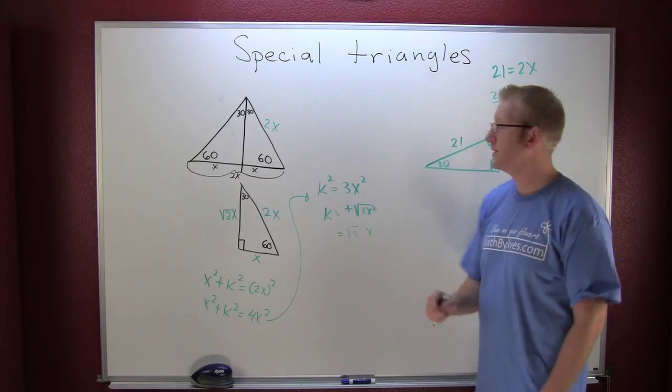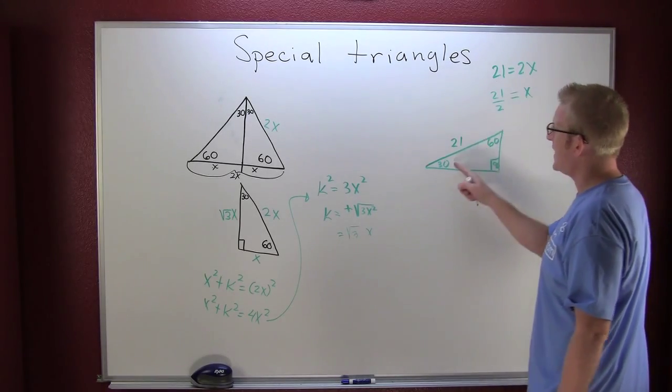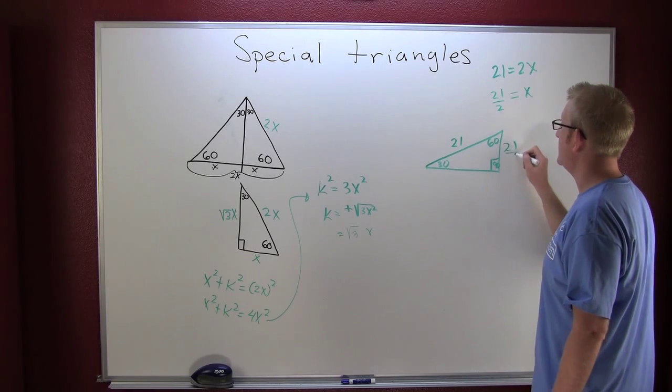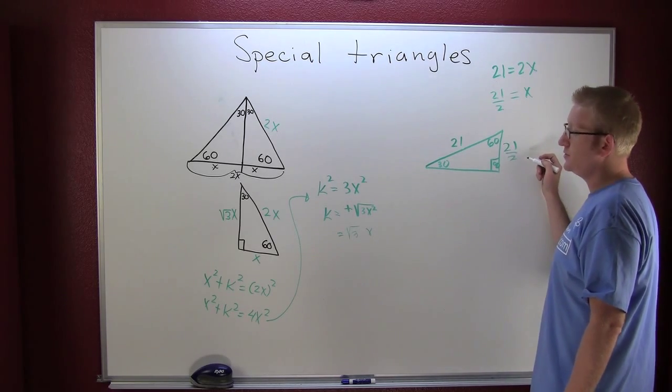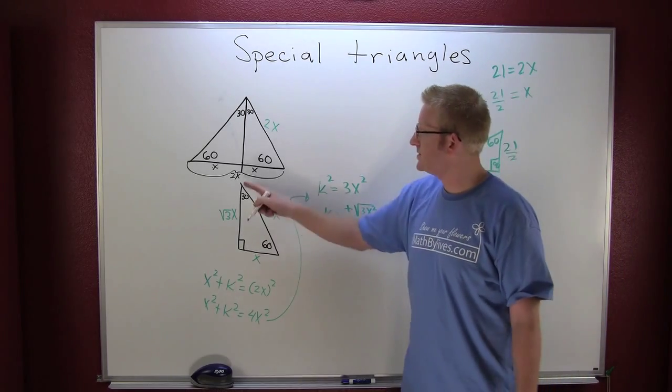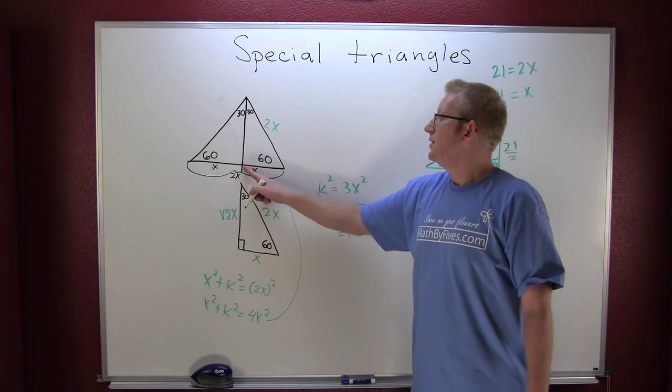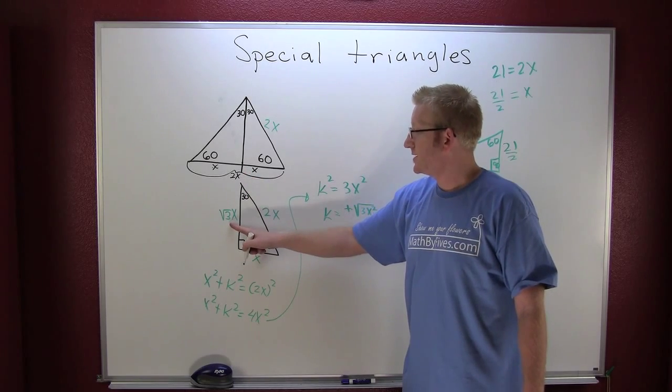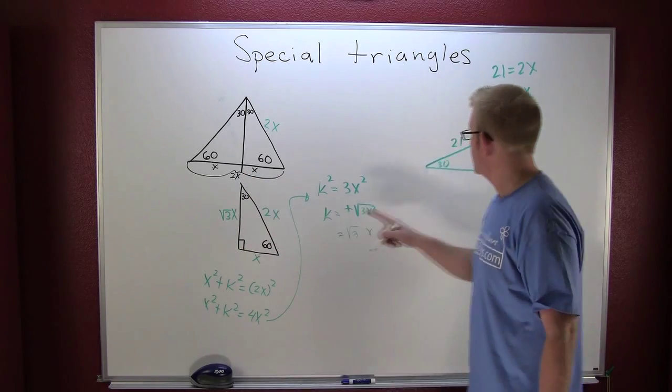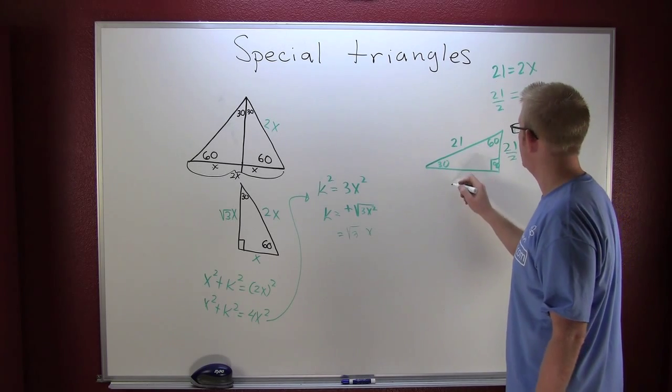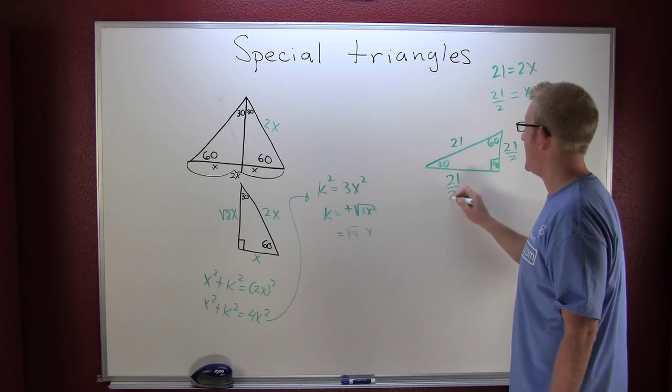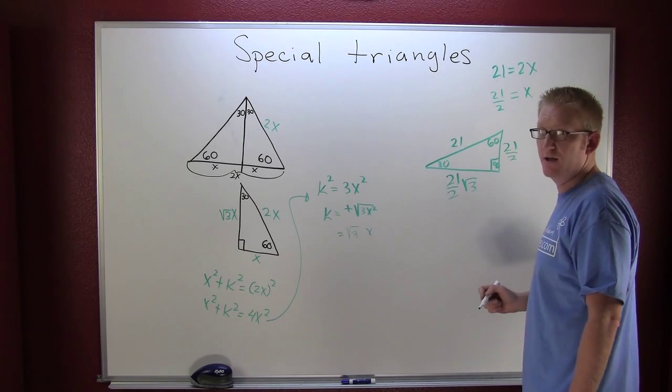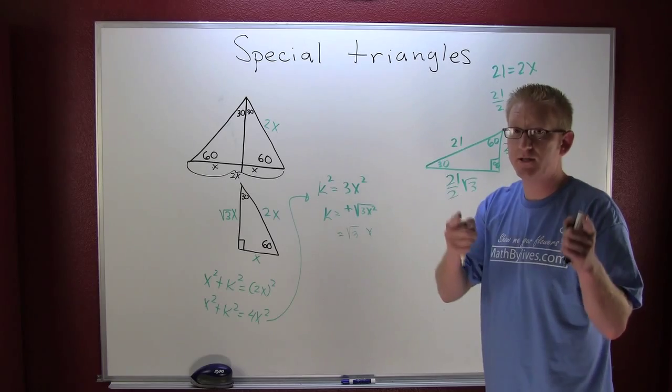Now these aren't nice numbers but they're your numbers so we're going to work with it. x just happens to be the length of the small side so this is 21 halves. We see the altitude of our equilateral triangle is going to be root 3x or the side opposite the 60. So the side opposite the 60 is going to be 21 halves root 3. It's disgusting, it's ugly, but it works and it's yours.